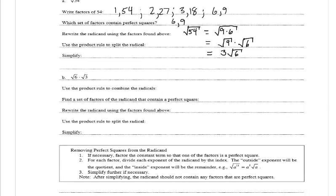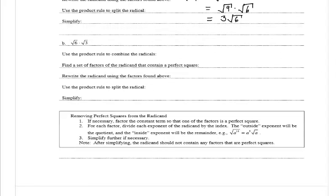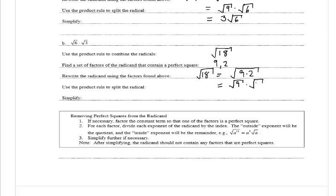In part b, we have the square root of 6 times the square root of 3. It wants us to use the product rule to combine the radicals, so the square root of 6 times the square root of 3 can be written as the square root of 18. Then we find factors of 18 containing a perfect square: 9 and 2. So the square root of 18 equals the square root of 9 times 2, which splits to the square root of 9 times the square root of 2, giving us 3 times the square root of 2.